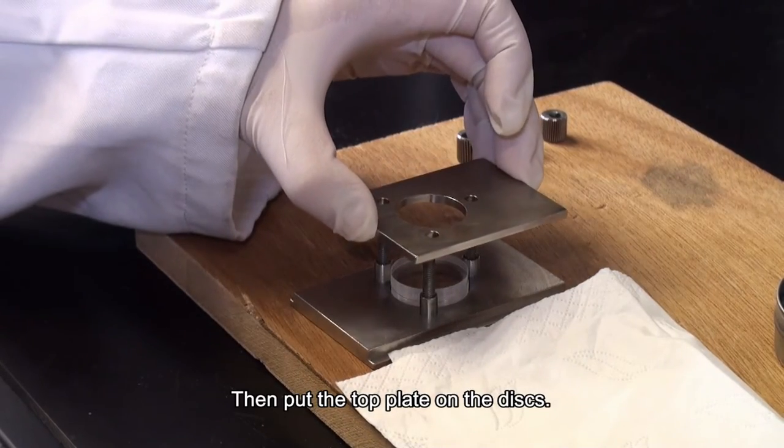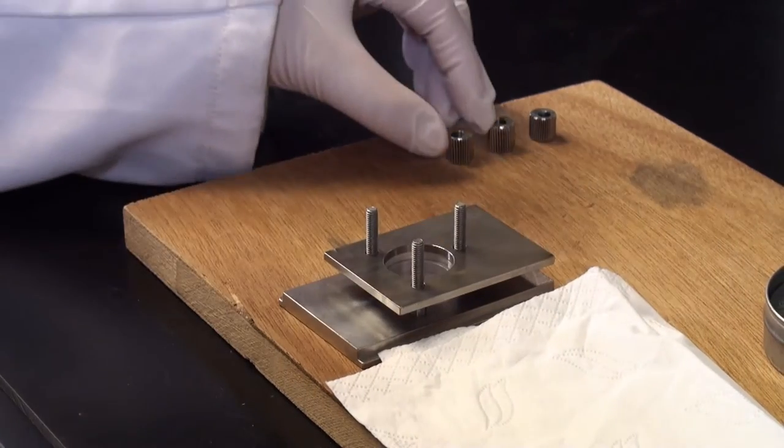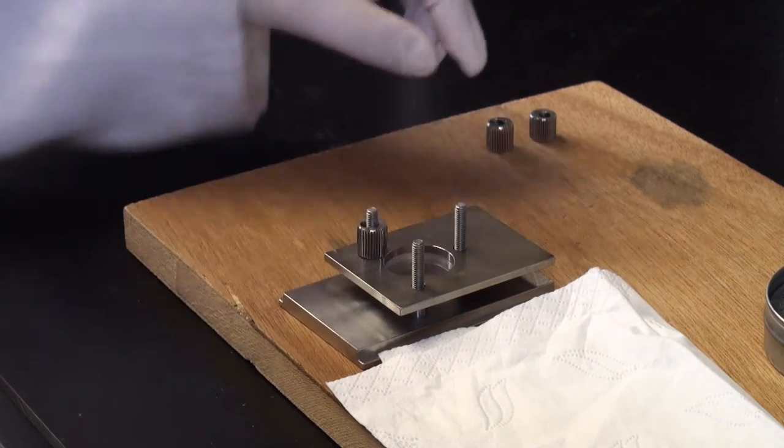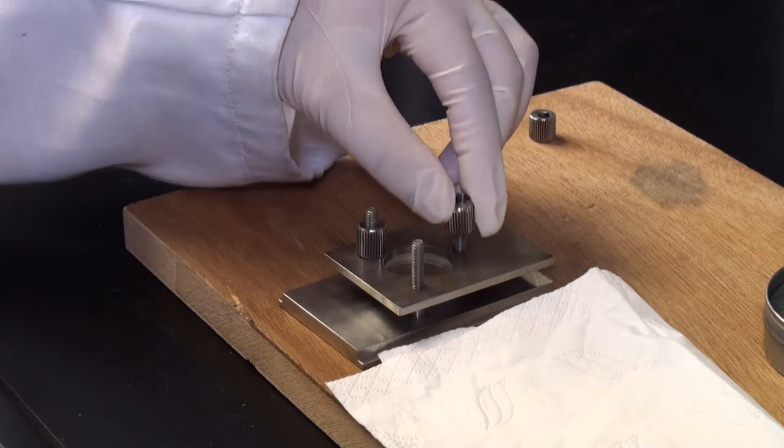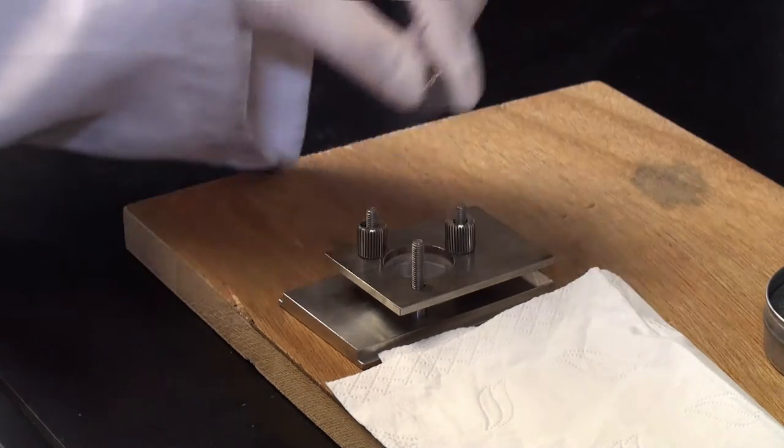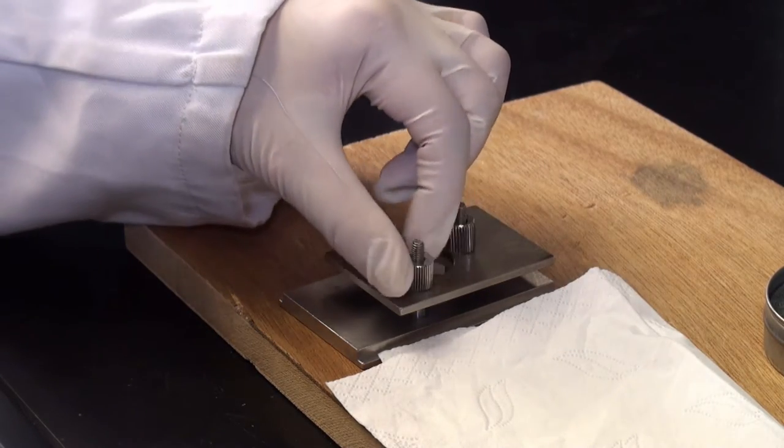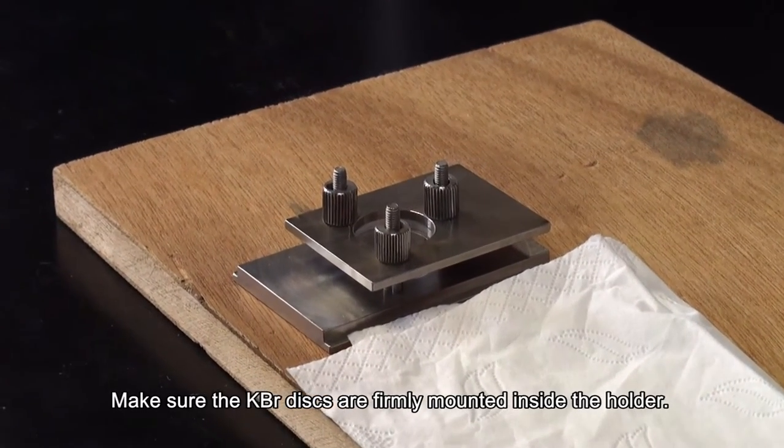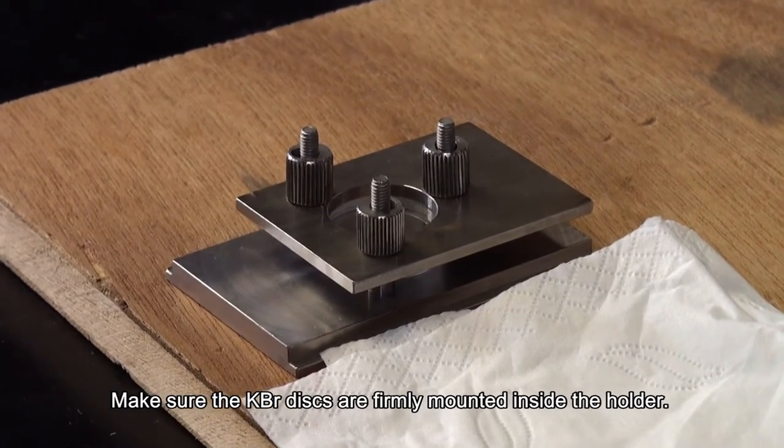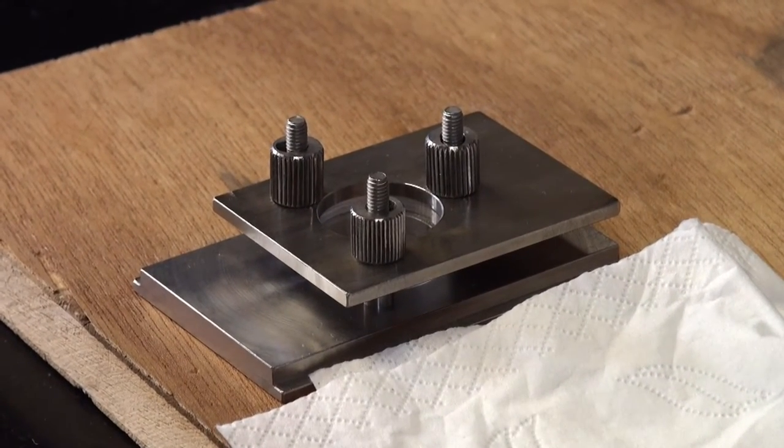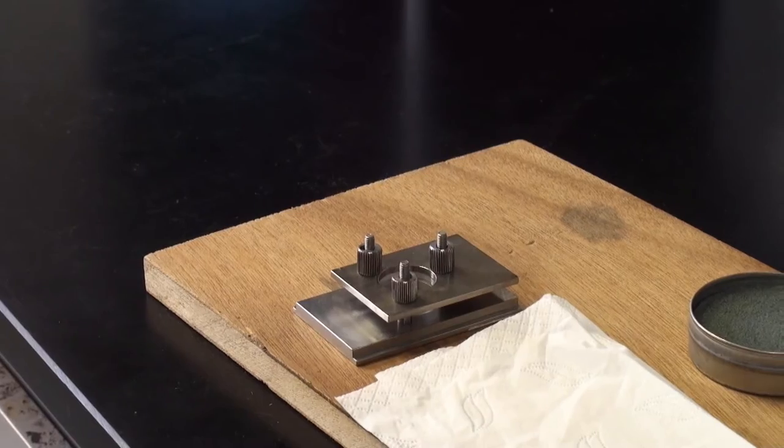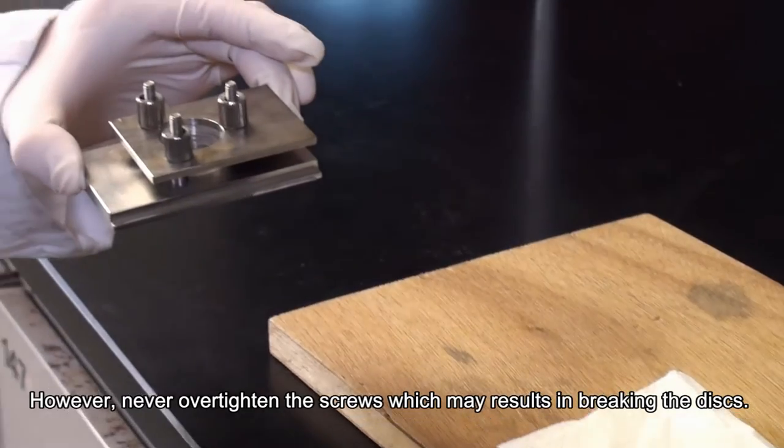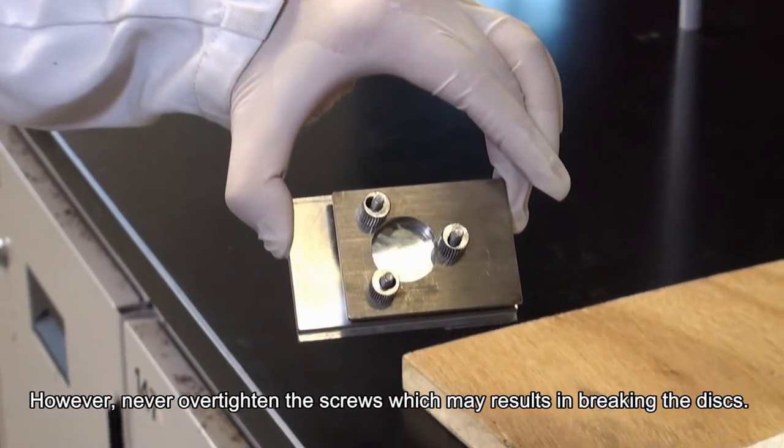Then, put the top plates on the disk. Gently tighten the screws. Make sure that KBr disks are firmly mounted inside the holder. However, never over-tighten the screws, which may result in breaking the disks.